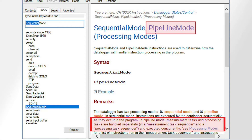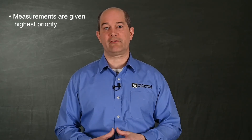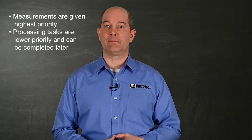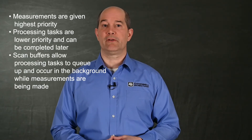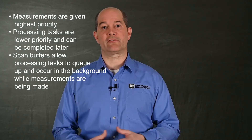Now, let's take a look at pipeline mode. The CR Basic Editor help offers this description for the pipeline mode instruction. In pipeline mode, measurement tasks and processing tasks are handled separately and executed concurrently. Measurement tasks are given the highest priority so that they execute first with precise timing in each scan. However, processing tasks don't have to be done at a precise time and can be completed later, even during a different scan if the data logger has a tight time schedule. The ability to make and process measurements concurrently is accomplished by using scan buffers that allow processing tasks to queue up and occur in the background while measurements are being made.